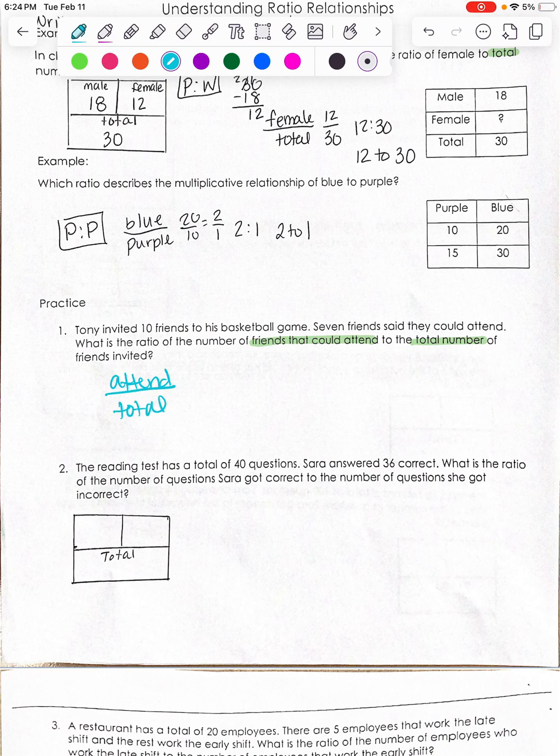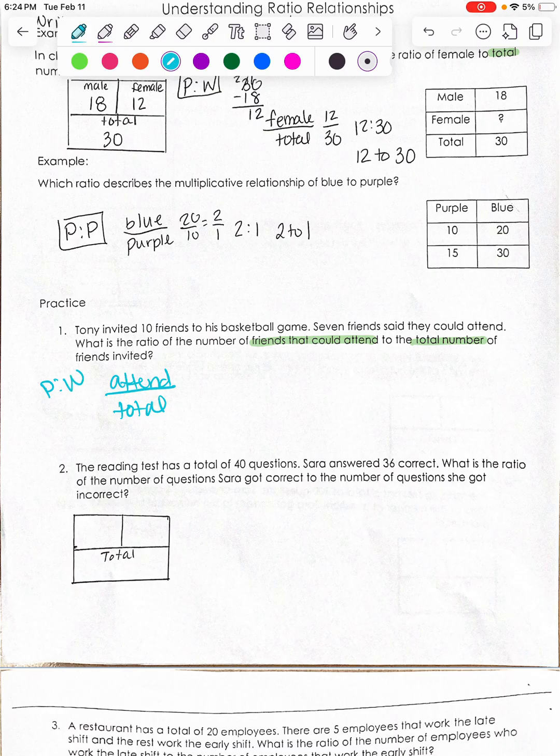This is a part to whole relationship because it's comparing part of the kids to all of the friends, to the whole thing. So how many people could attend? 7. Out of how many people did he invite total? 10.